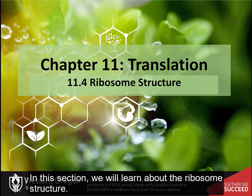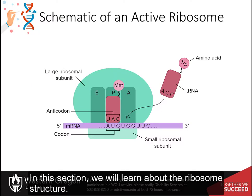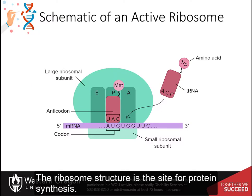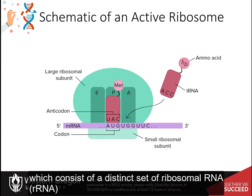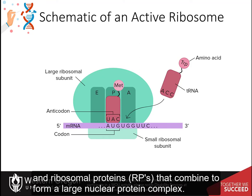In this section, we will learn about the ribosome structure. The ribosome is the site for protein synthesis. It is highly conserved within all species of life and is composed of two unequal subunits, which consist of a distinct set of ribosomal RNA and ribosomal proteins that combine to form a large nucleoprotein complex.